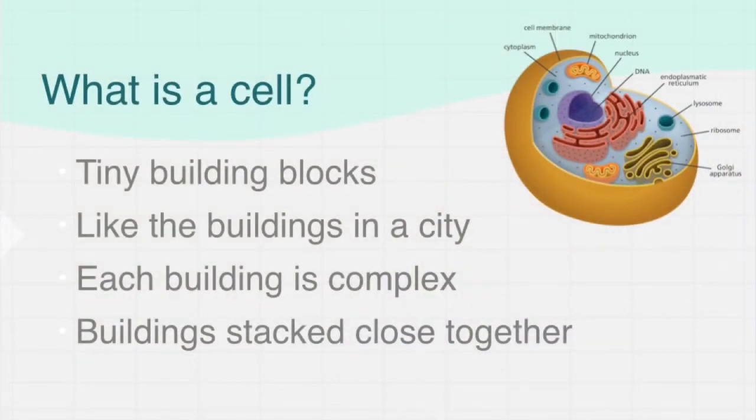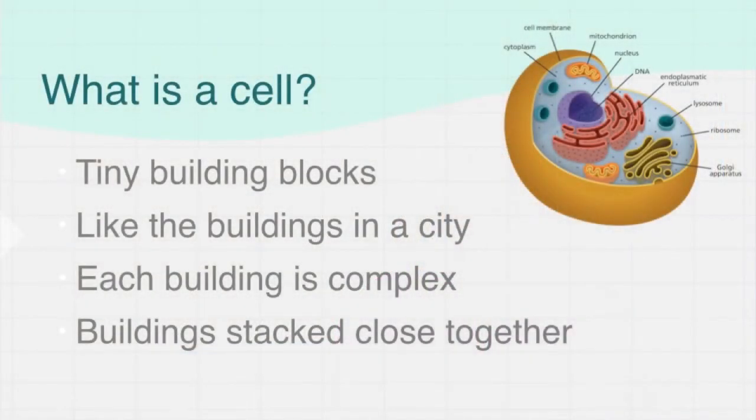Before I go any further with this explanation, I'd like you to imagine that every single cell is a building, because every cell is a complicated little thing. The buildings in a city all have different shapes and functions. You've got a whole lot of buildings that look similar if they are houses, and that makes up a residential area. You have buildings specifically for shops, factories, storehouses, warehouses — all these different buildings have different shapes, different functions, and different things happening inside of them. It is exactly the same with cells.